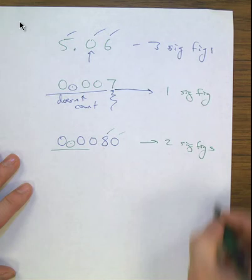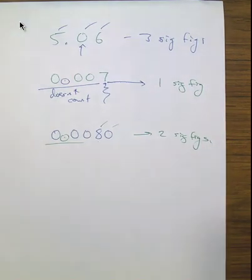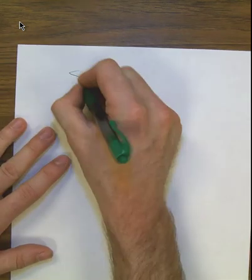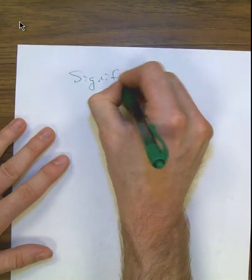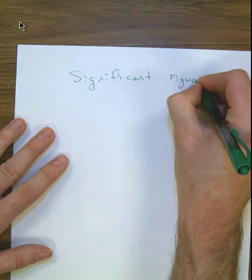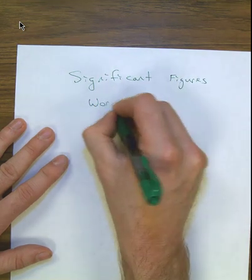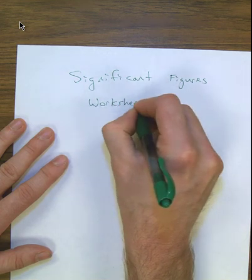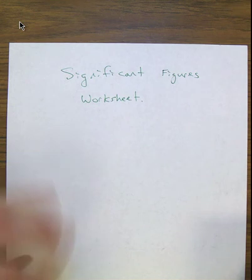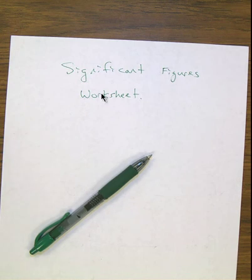We haven't gotten to the rounding piece yet — rounding has other rules applied to it as well. I'm going to post a worksheet titled 'Significant Figures.' Practice counting significant figures on that worksheet. When you come back to class, we'll do additional practice counting sig figs and then take it to the next step on how to round.